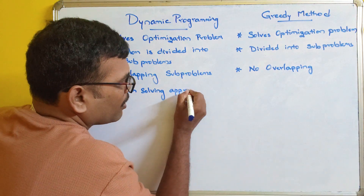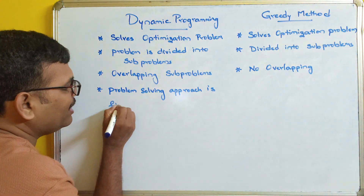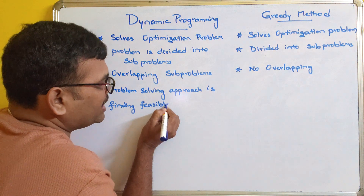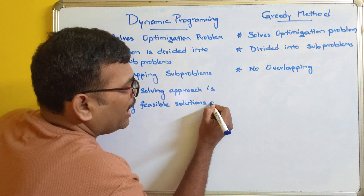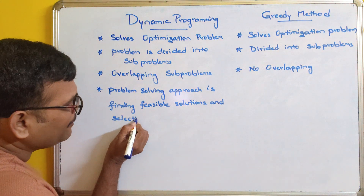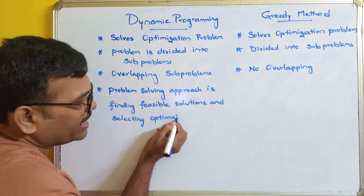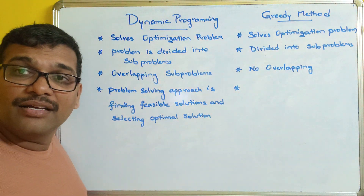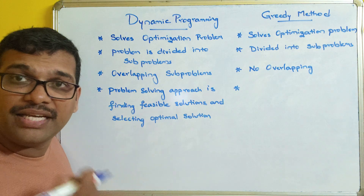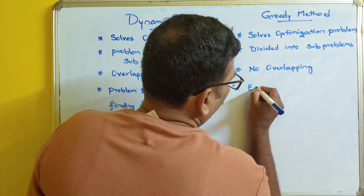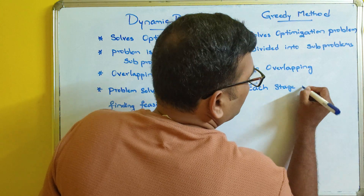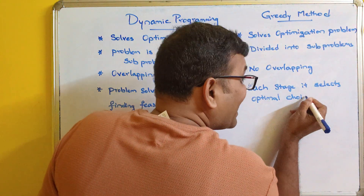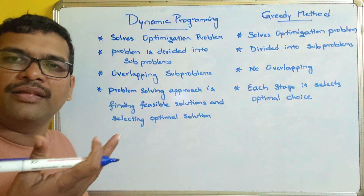In the greedy method, the problem-solving approach involves finding all feasible solutions and then selecting the optimal solution. However, rather than finding all feasible solutions first, greedy selects the optimal choice at each and every stage.